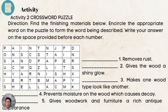Activity two is a crossword puzzle. Direction: Find the finishing materials below. Encircle the appropriate word on the puzzle to form the word being described. Write your answer on the space provided before each number in your TLE notebook. The first clue: it removes rust. The second: it gives the wood a shiny glow. The third: makes one wood type look like another. The fourth: prevents moisture on the wood which causes decay. And last: gives woodwork and furniture a rich antique appearance. If you still need more time to answer the crossword puzzle, please pause this video. For those who are done, let us check your work now.